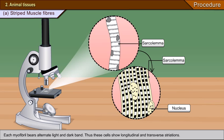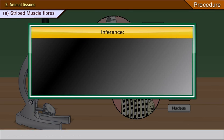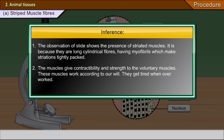Each myofibril bears alternate light and dark bands. Thus, these cells show longitudinal and transverse striations. The cells are surrounded and held by connective tissue. Inference: The observation of the slide shows the presence of striated muscles, because they are long cylindrical fibres having myofibrils which make striations tightly packed. These muscles give contractility and strength to the voluntary muscle.